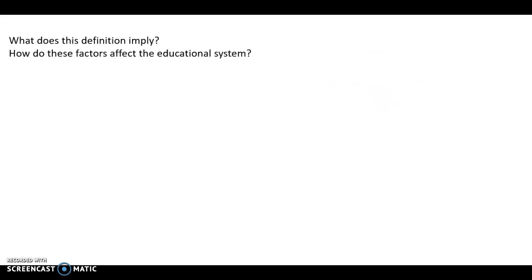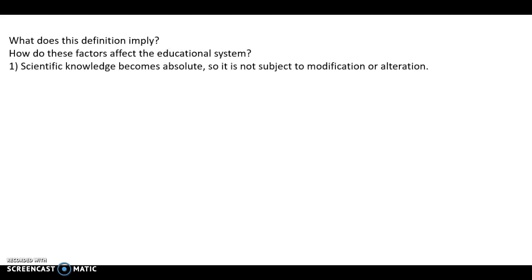What does this definition imply? How do these factors affect the educational system in each country? This is the most important part of this video. First, scientific knowledge becomes absolute — most students believe that it is absolute and not subject to modification or alteration. Even I, regarding myself as a student, only believed any information I was given and was not able to think about it or try to criticize things. Second, accumulating scientific knowledge without aims — most of us gain a lot of information without purpose and are not able to use our science knowledge in any practical application.